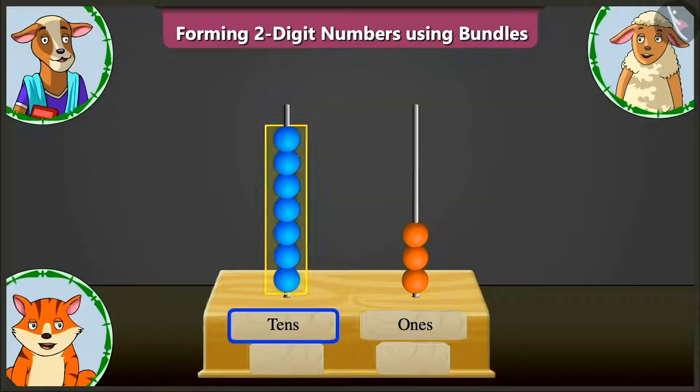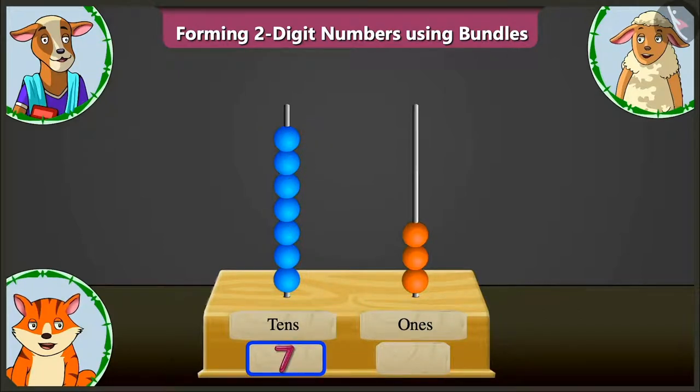in the tens box, there are one, two, three, four, five, six and seven beads. So, in the tens box, we have to write seven. Very good.